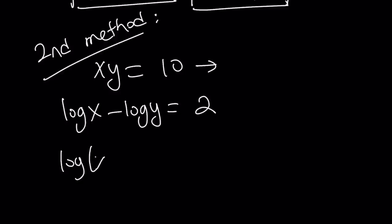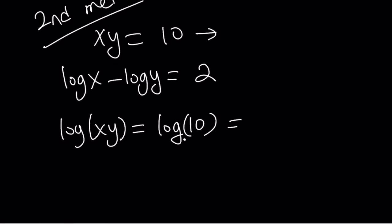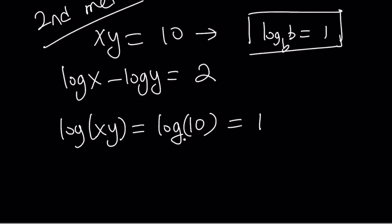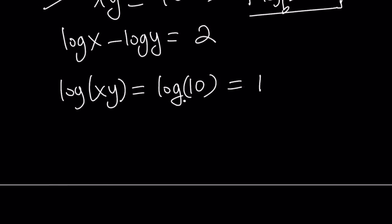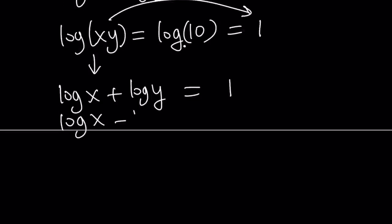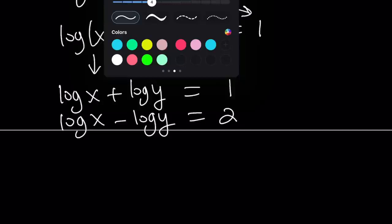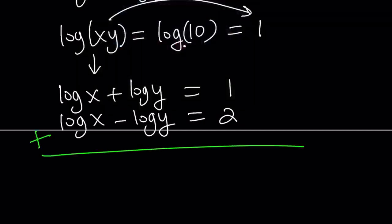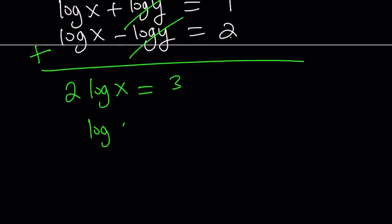If you log xy, since xy is equal to 10, log(xy) is going to be the same as log 10. But log 10 in base 10 is going to be 1, because log base b of b is always 1. So now this gives us something nice — log x plus log y equals 1. And we already know that log x minus log y equals 2. Now we can go ahead and add these two equations to eliminate log y. From here, 2 log x equals 1 plus 2, which is 3, and log x becomes 3 over 2.